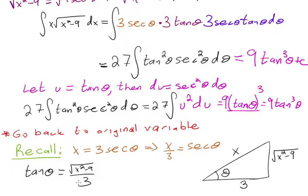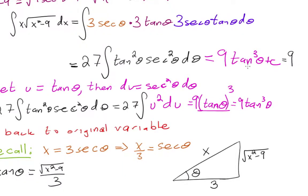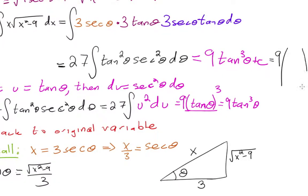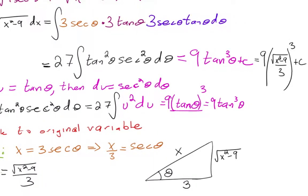We plug that back in: the integral equals 9 times [√(x² − 9)/3]³ plus C. U-substitution would be the better choice for this particular integral, but you can't always use u-substitution.